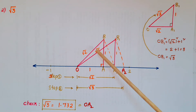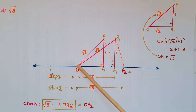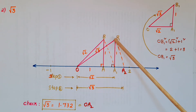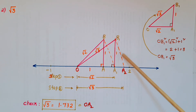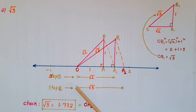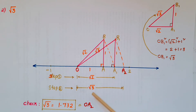Apply this value on the number line — OB1 is root 3. Using a compass with center O and radius OB1, draw an arc that intersects the number line at A2. So OA2 equals root 3. We can verify with a scale — root 3 is approximately 1.732.